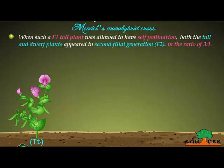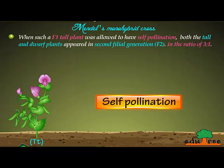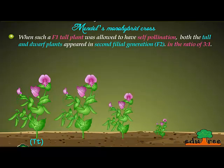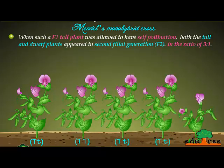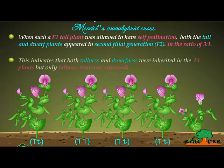When such an F1 tall plant was allowed to self-pollinate, both tall and dwarf plants appeared in the second filial generation, called F2, in the ratio of 3:1. This indicates that both tallness and dwarfness were inherited in the F1 plants, but only the tallness trait was expressed.